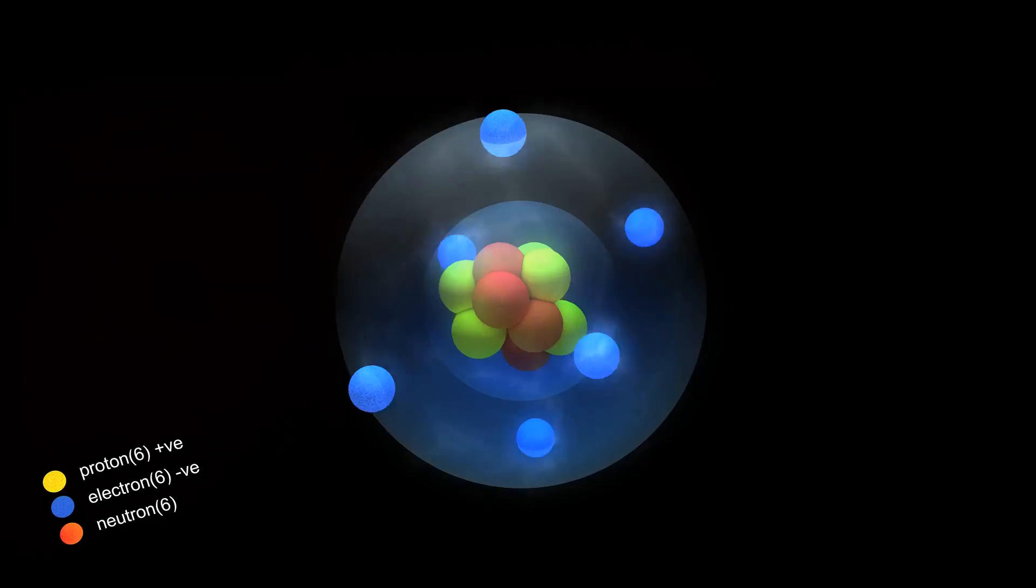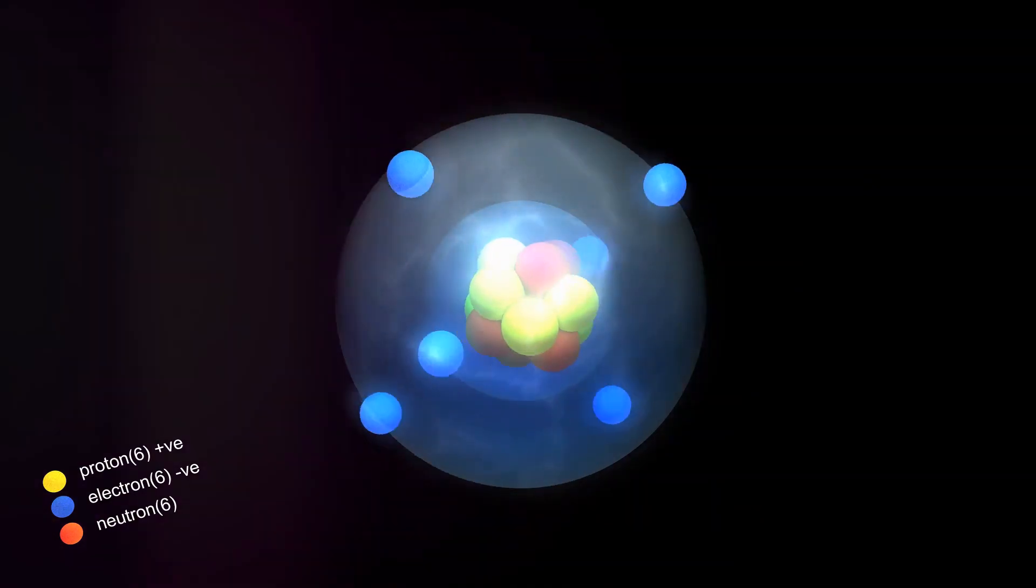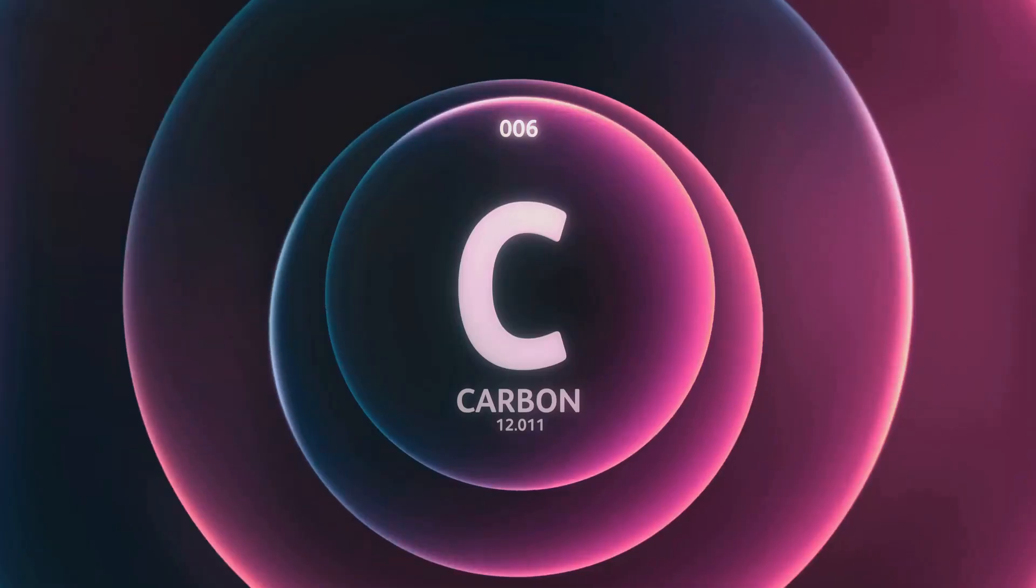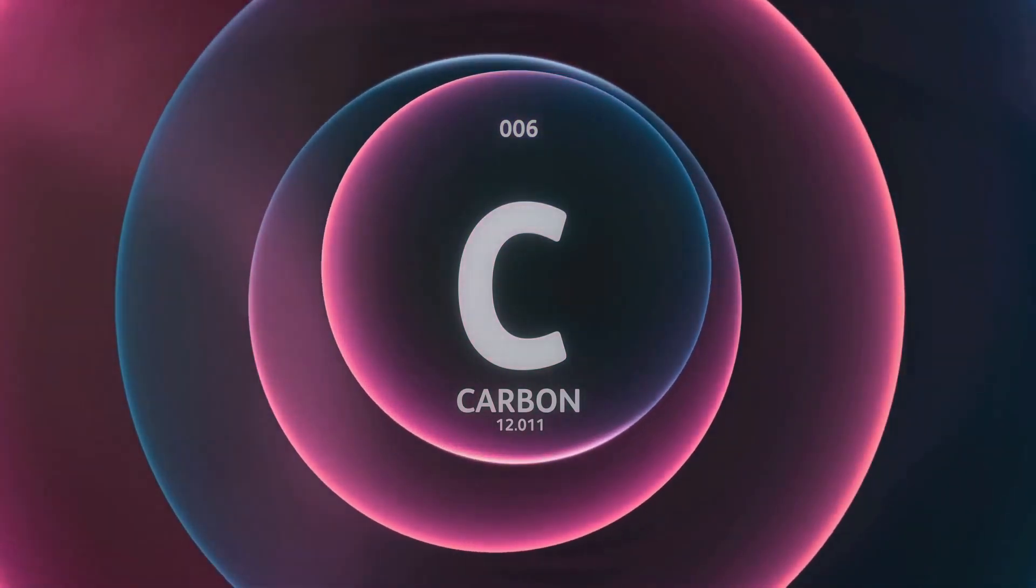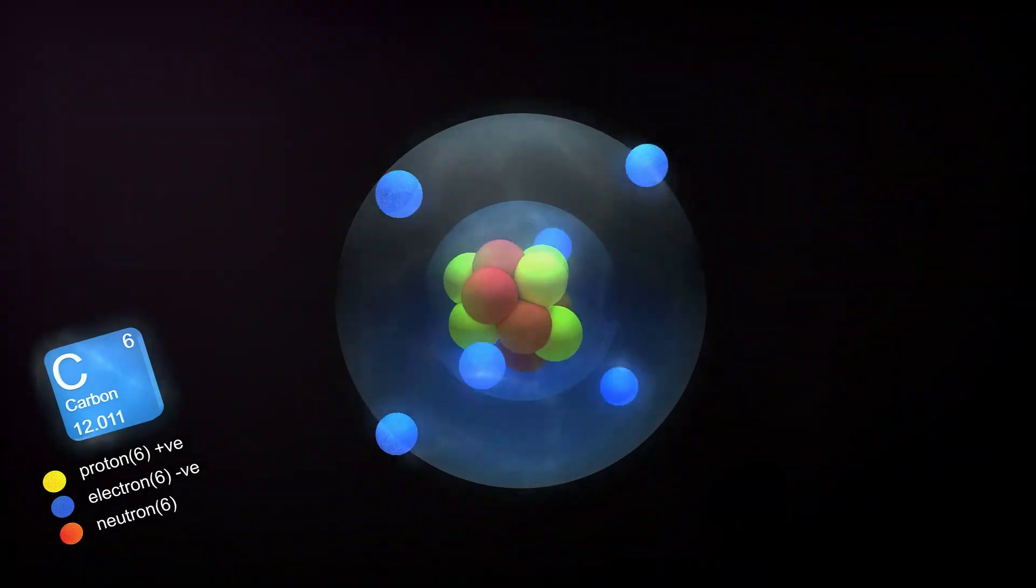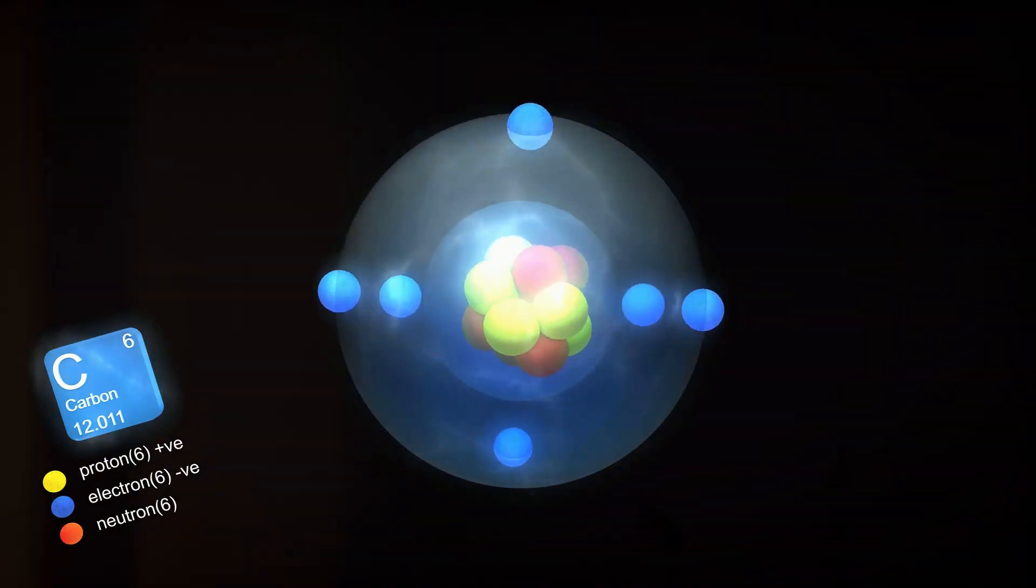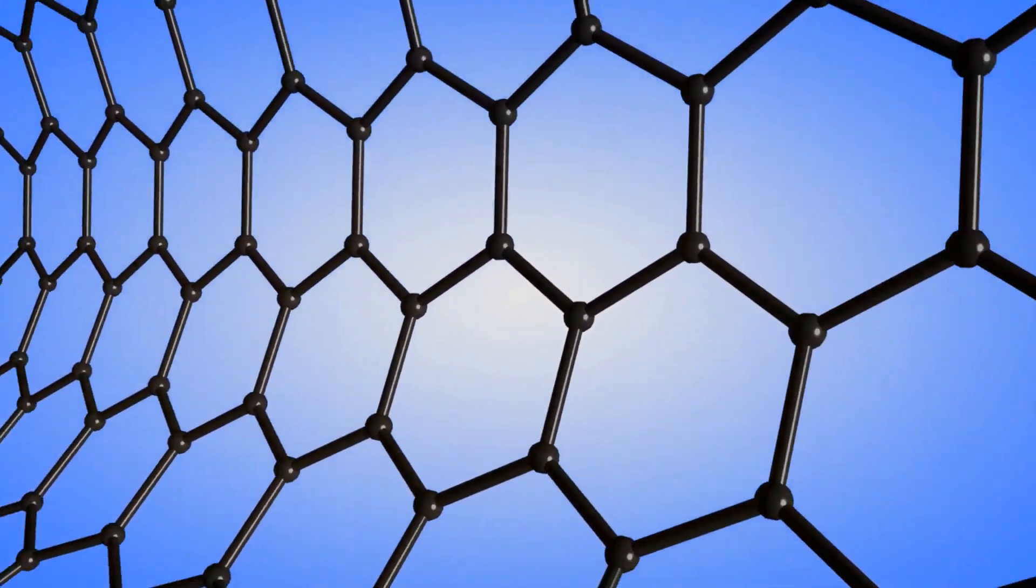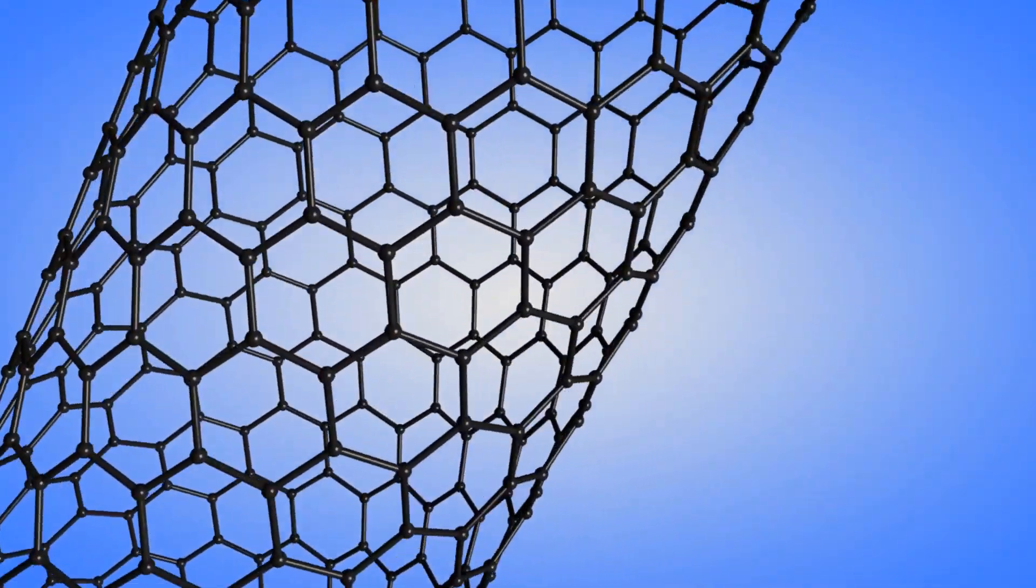Researchers have recently made an intriguing discovery about the lower energy states of the carbon-12 nucleus. They found that these states consist not of a random, chaotic mess, but of clusters forming precise triangular shapes. This discovery significantly enhances our understanding of how carbon, a vital element for life as we know it, forms in the universe.